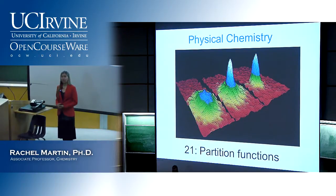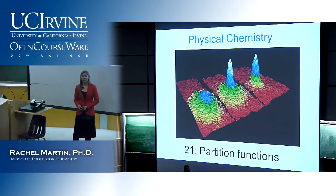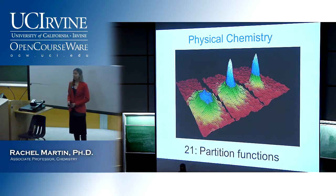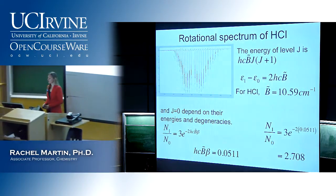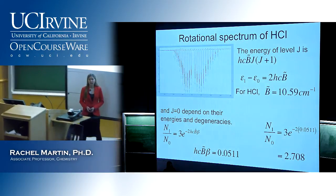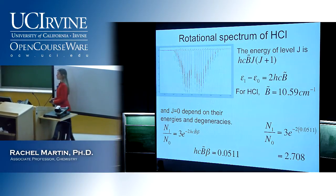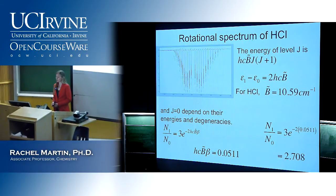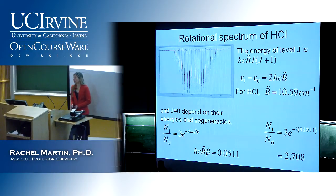Anybody have any questions before we continue talking about statistical mechanics? OK, let's do it. So last time we ended up talking about the rotational spectrum of HCl and how we get the intensities of different peaks, and we looked at the relative populations between the ground state and the first excited state in this rotational spectrum.